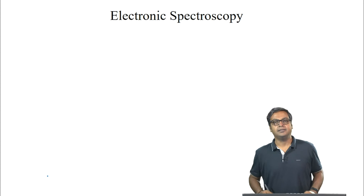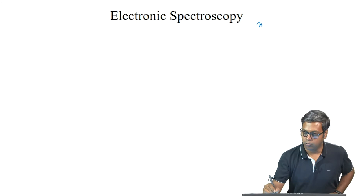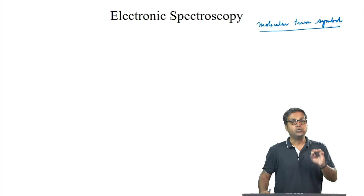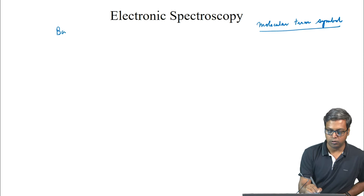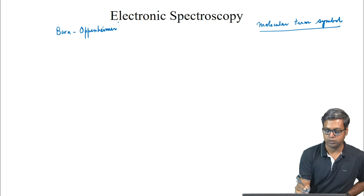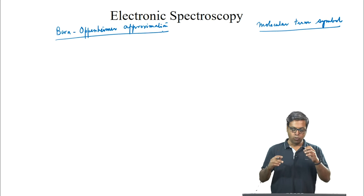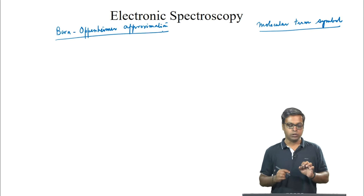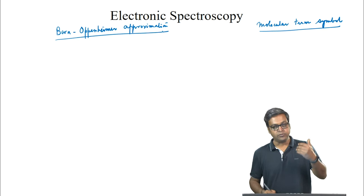Hello all, welcome to the lecture. In the last lecture, we discussed about the molecular term symbol. In today's lecture, we will start with the Born-Oppenheimer approximation, which we have talked about before in previous modules. This approximation can be used as the first approach to the electronic spectra of diatomic molecules.